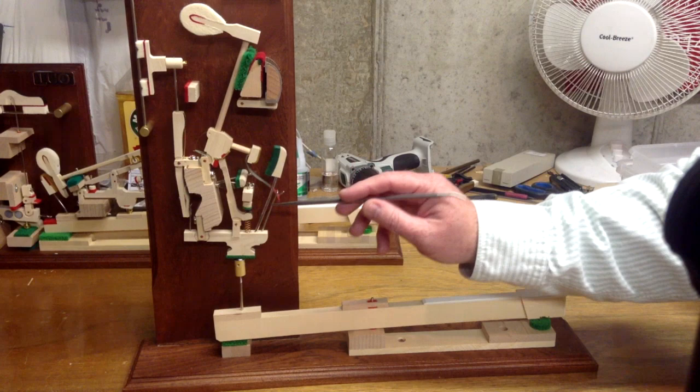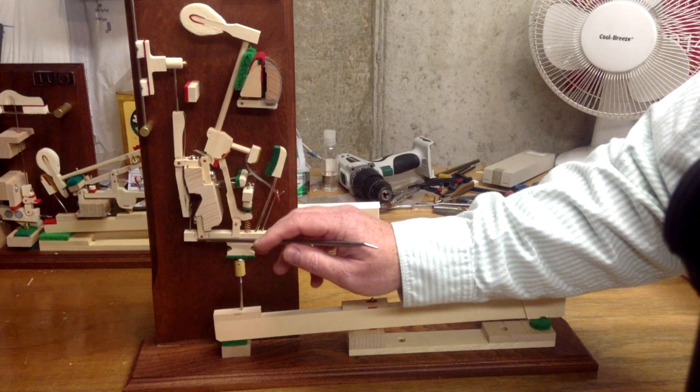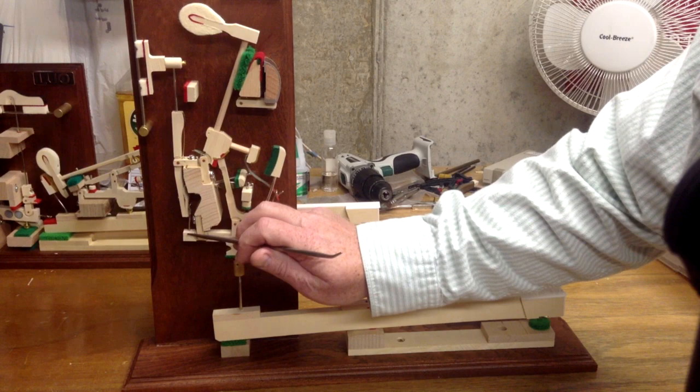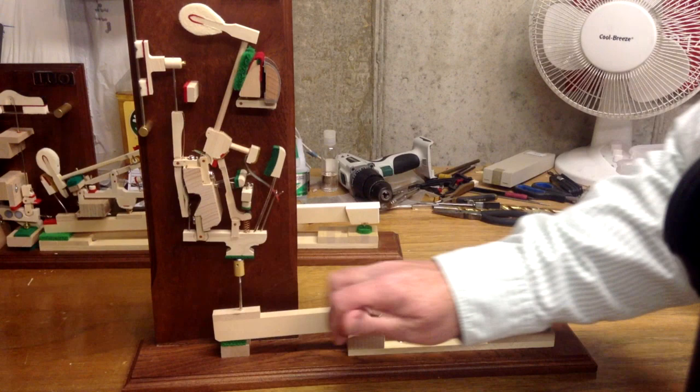Let's see, going over here. Back here as part of the whippen is the whippen flange. That flange, you can see it pivots on that flange. Then the very back of the whippen is the spoon, the damper spoon. That's the damper spoon.